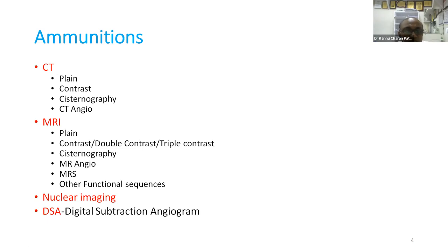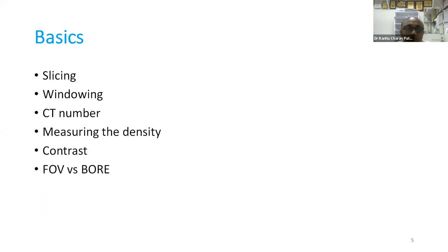What imaging modalities do we have? We have CT scan — plain, contrast, cisternography, and CT angio. In MRI, we have plain, contrast, double contrast, triple contrast, cisternography, MR angio, MRS, and other functional sequences. We also have nuclear imaging and digital subtraction angiography.